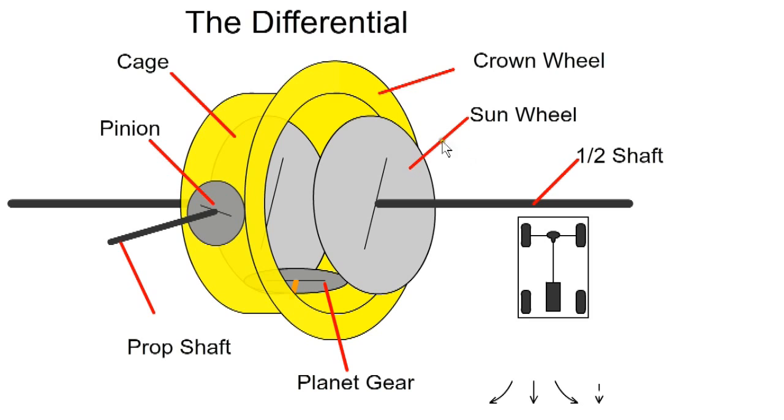With an open differential, the half shaft has the wheel attached at one end and the sun gear at the other. The sun gears are meshed with a planet gear which can rotate around the sun gear. Normally there are two planet gears, but we only show one for clarity.